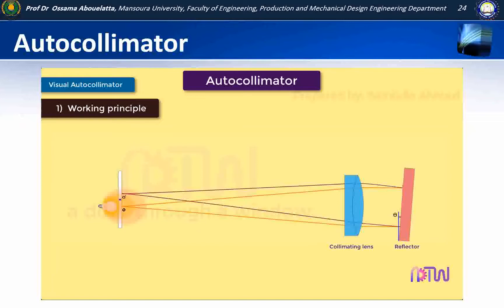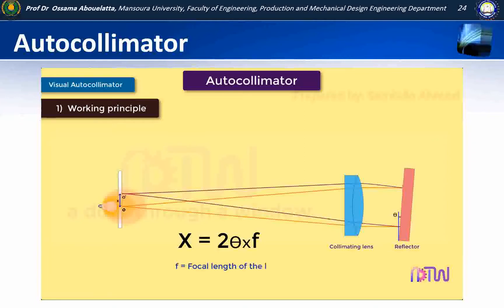By knowing the distance between O and O dash, which can be denoted by X, we can find out the angle theta by using this relationship, which says X is equal to 2 theta into F. Here F is the focal length of the objective lens. This is the working principle behind the autocollimator.